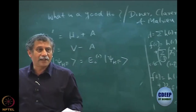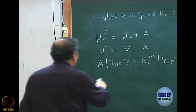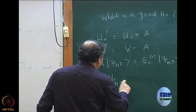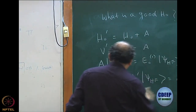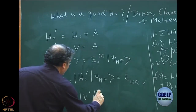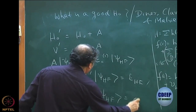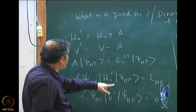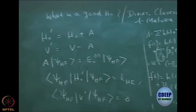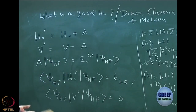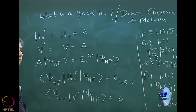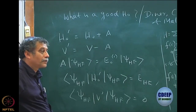Remember, A is not a number operator because with respect to other determinants it may give different values, but when it acts on Psi Hartree-Fock it gives E01 times Psi Hartree-Fock. If I do this, results still do not change — Psi Hartree-Fock times H0 prime times Psi Hartree-Fock becomes E Hartree-Fock, and V prime gives zero again. So V prime gives E01 plus E Hartree-Fock, but we subtract E01, and again it becomes the same value.